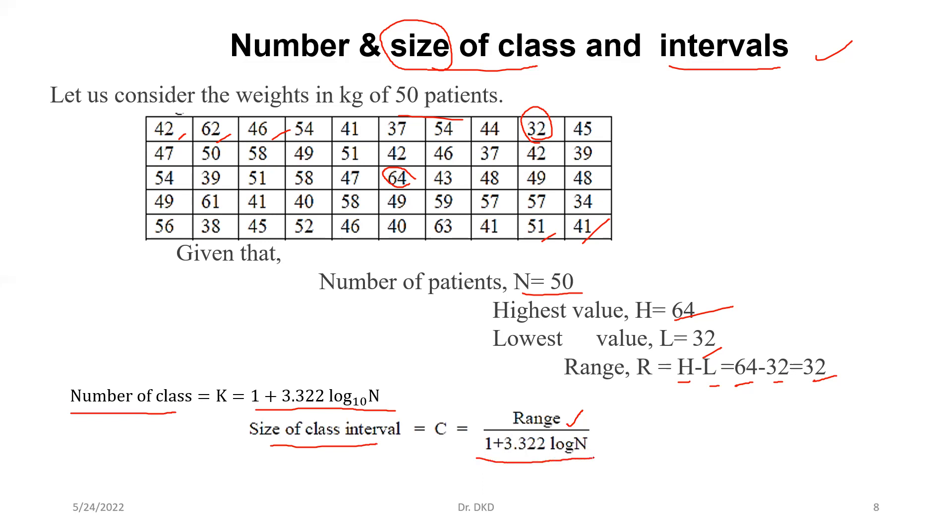So number of class interval is 1 plus 3.322 log n. We'll put the value, range is 64 minus 32, 1 plus 3.322 log 50. So we'll calculate it, it would be 32 and denominator would be 6.64. So here number of class would be 6.64. Round figure, we can take it 7.